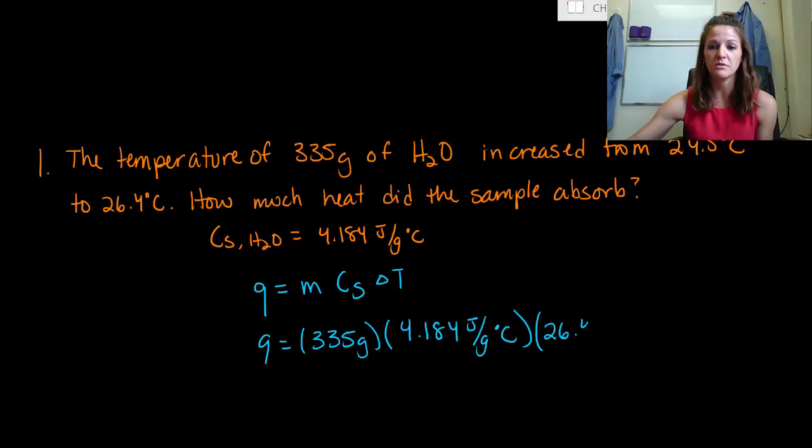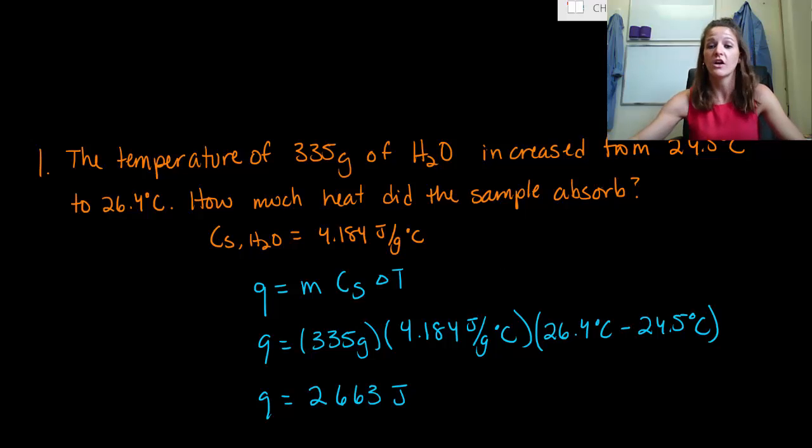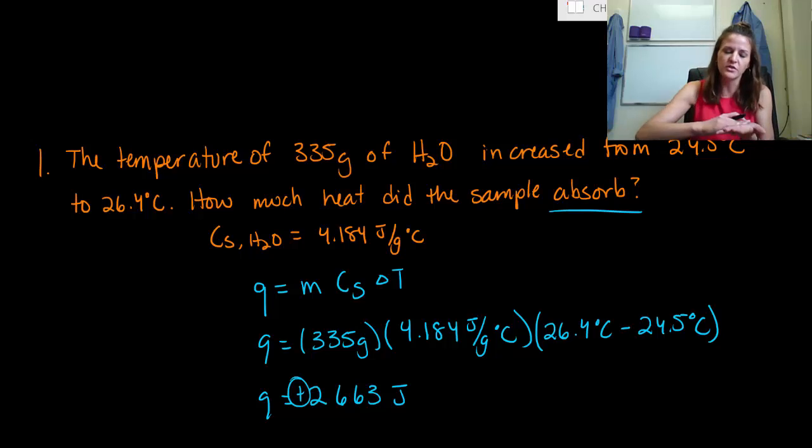So for final, you have 26.4 degrees Celsius minus your initial temperature, which is 24.5 degrees Celsius. And simply all you have to do is put this into your calculator. So 335 times 4.184 times the difference of 26.4 minus 24.5. If you do that properly, you end up with a heat term that is equal to about 2,663 joules of energy that are absorbed. So you see that this is a positive term, so we know that this energy is being absorbed by the water, which makes sense. The temperature of the water went up, it definitely had to absorb heat.